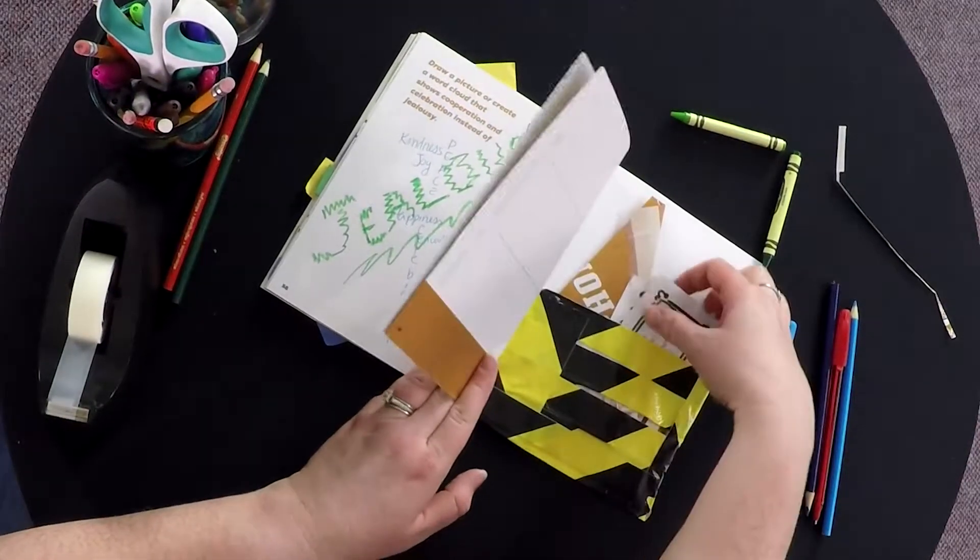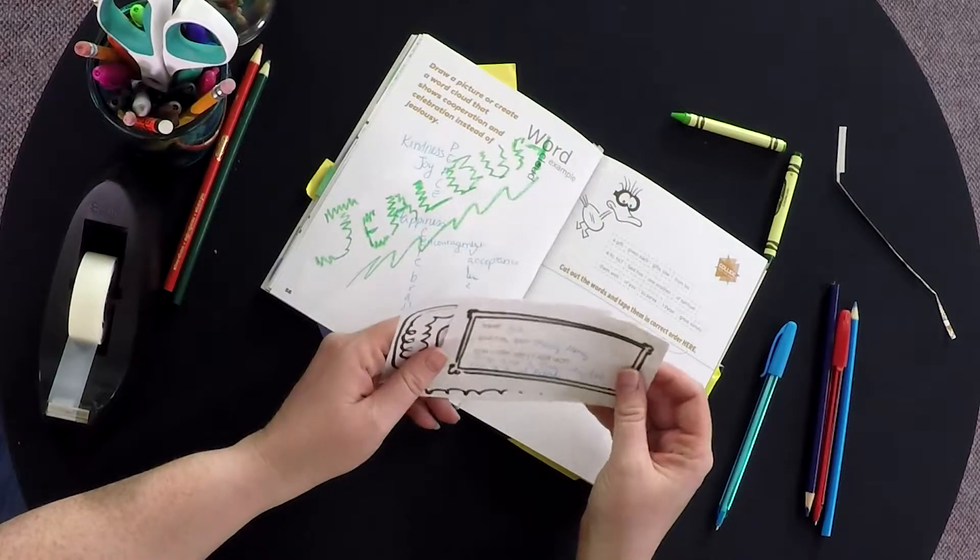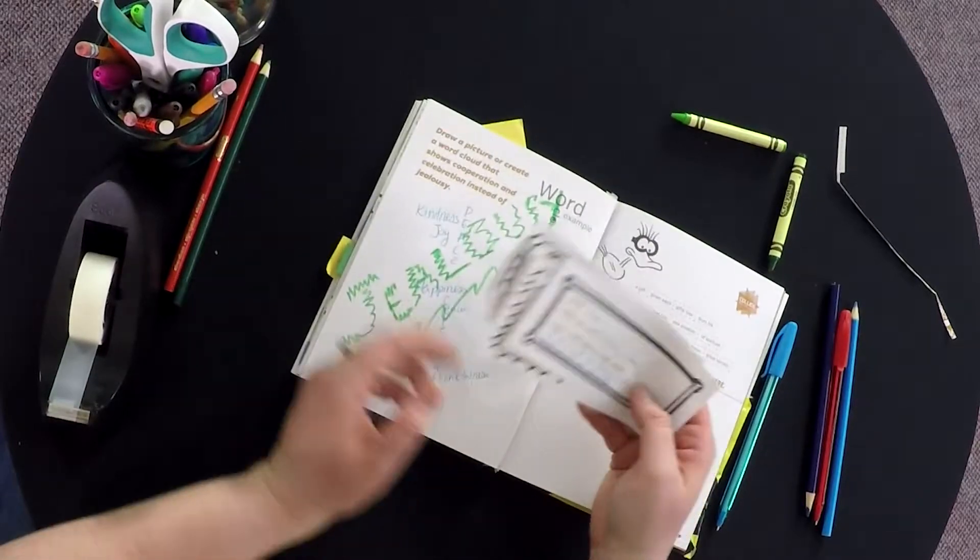Near the end of the lesson, you'll have them take the three cards that they received earlier and tape them to this page in the book. This is to show that every gift is valuable.